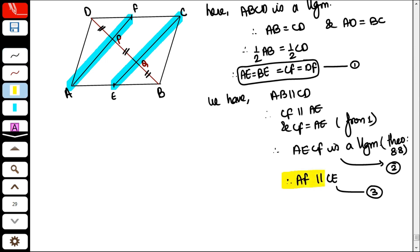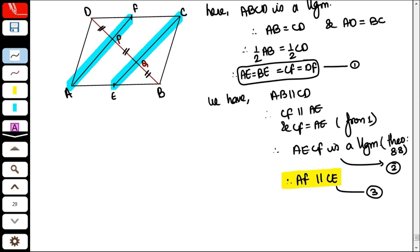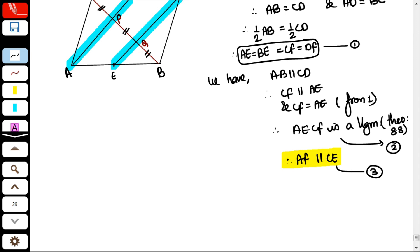In triangle APB. Now, the lower triangle. In triangle APB. In triangle APB, E is the midpoint of AB, and EQ is parallel to AP. This will be written from point number 3.